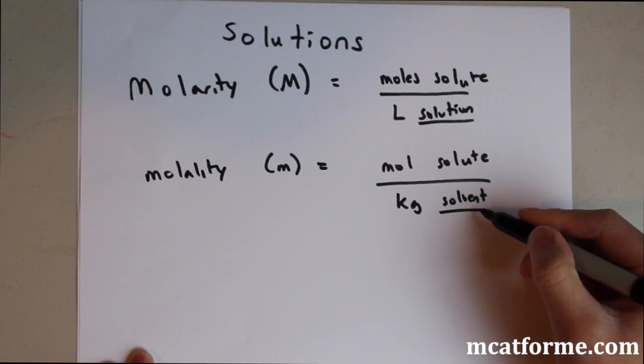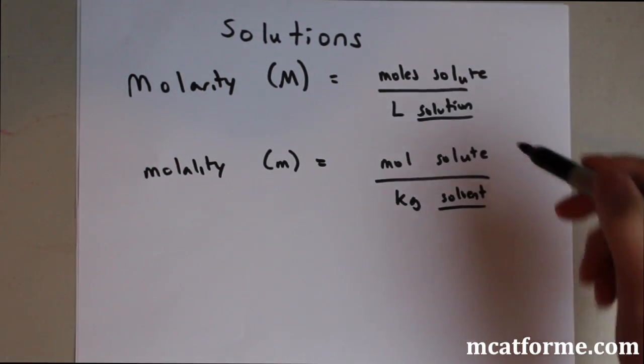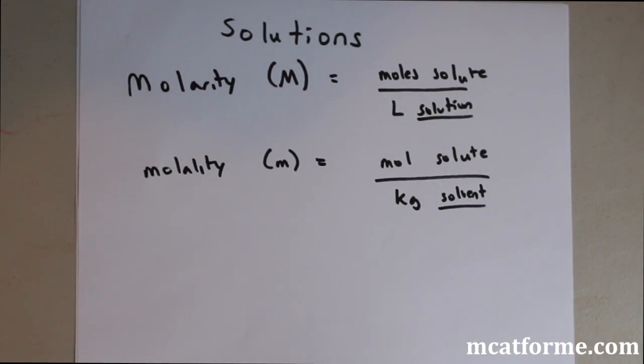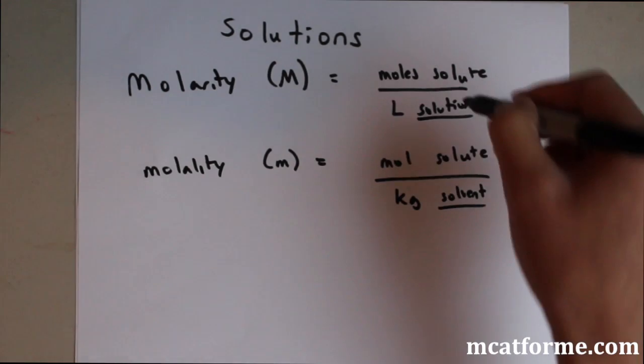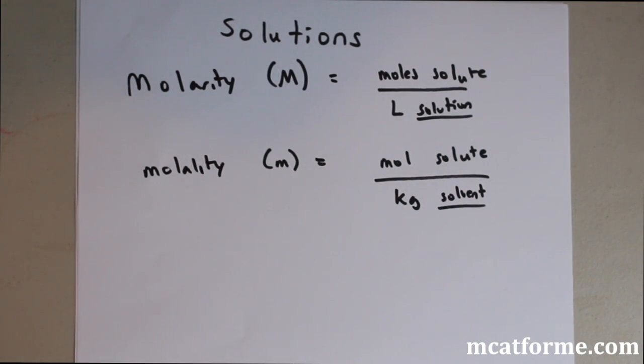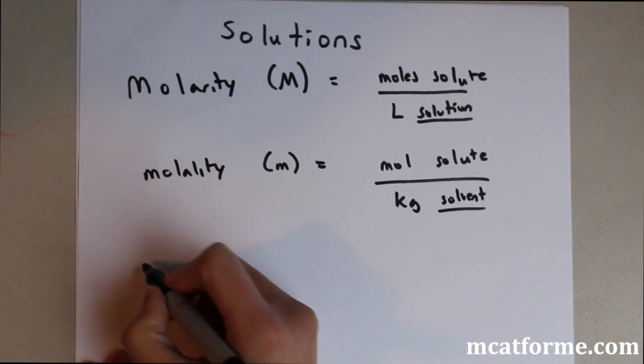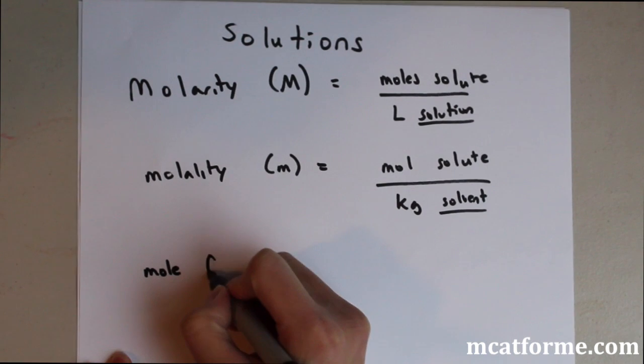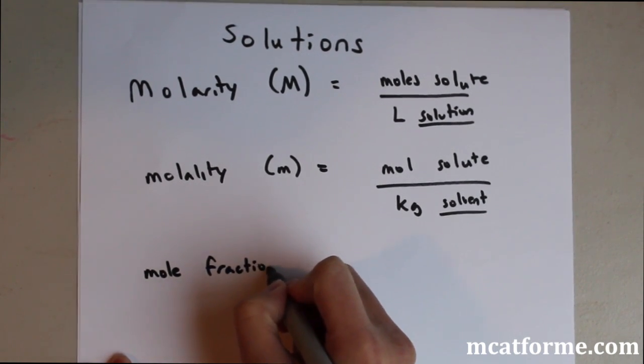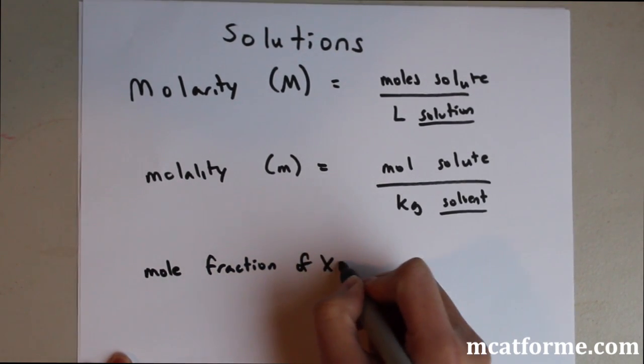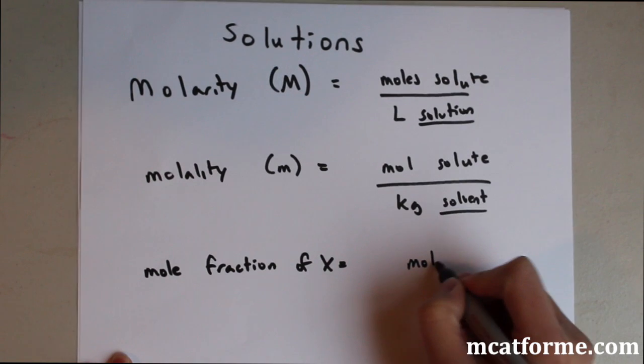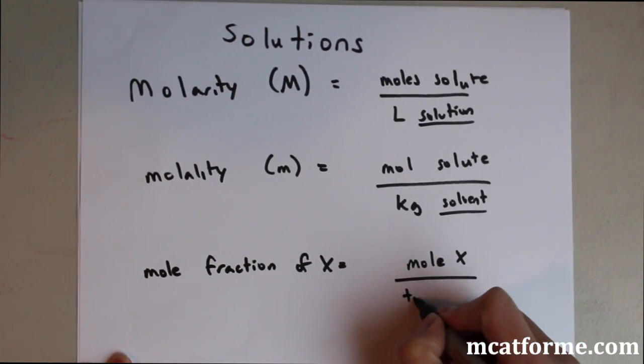So that's different from solution because solvent and solute will equal the solution. So the solution is bigger than the solvent, not by much but still by some. Then mole fraction and we'll say what is the mole fraction of x. So that is the number of moles of x over the total number of moles.